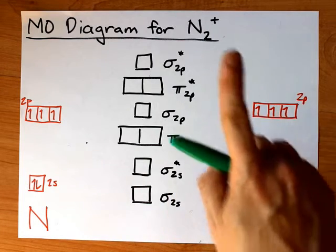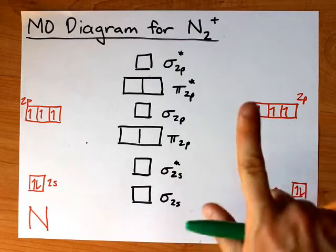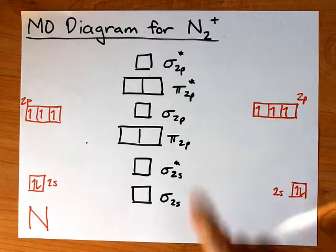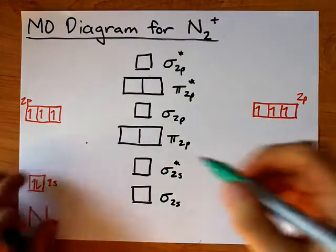More importantly, with 9 valence electrons, let's use the Aufbau principle, bottom-up, and Hund's rule, spread them out before you double them up, to fill this molecular orbital diagram with 9 electrons.